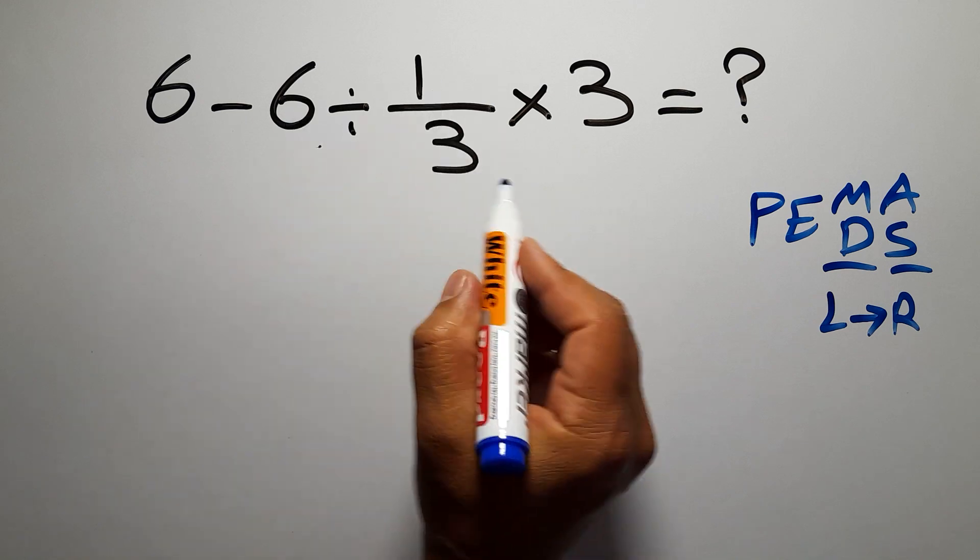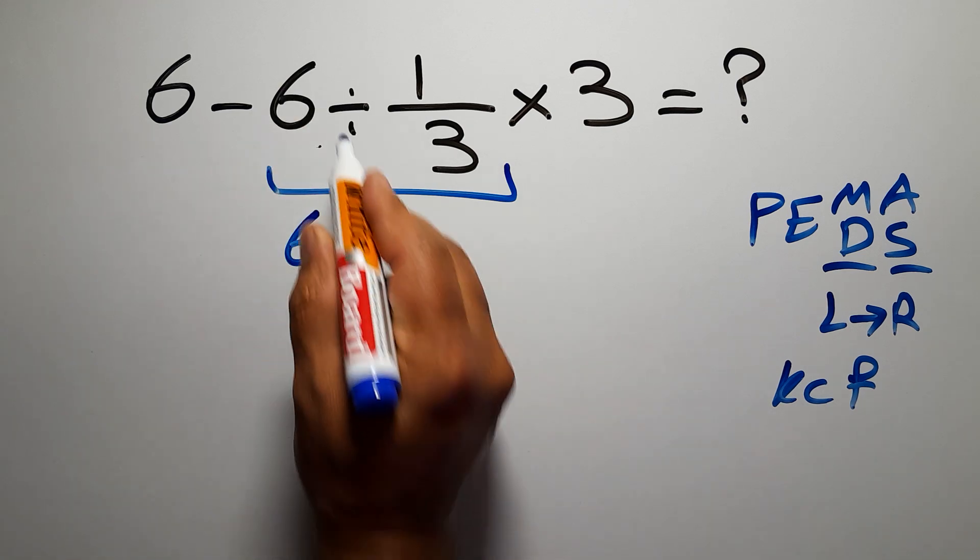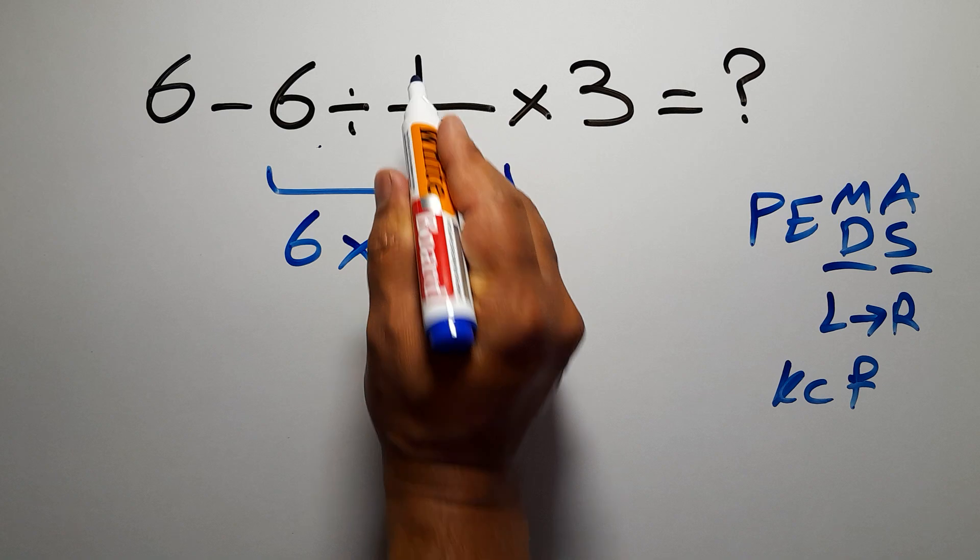First, 6 divided by 1 over 3, according to the KCF rule: K stands for keep, C stands for change, and F stands for flip. We can write keep the first fraction, change division to multiplication, and flip the second fraction.